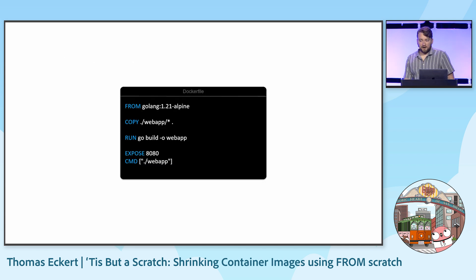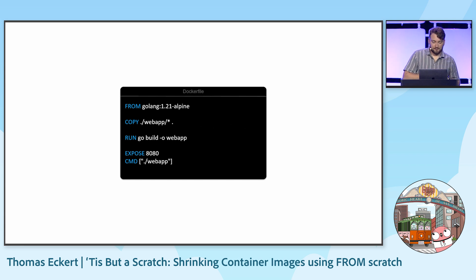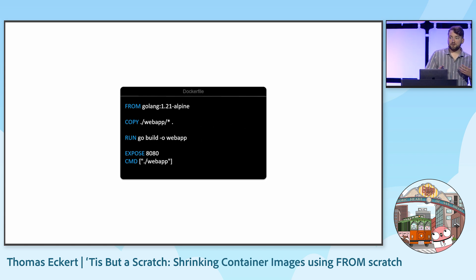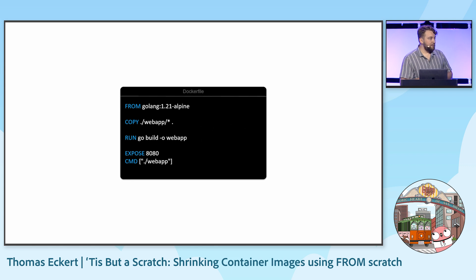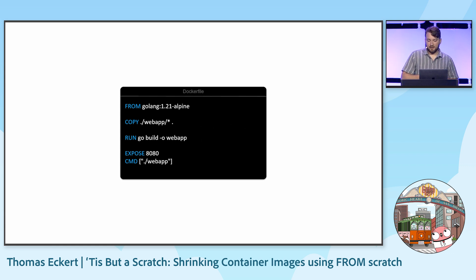Let's begin with a fairly normal-looking Dockerfile to ship a Go web application. I can count myself among the people who have written a Dockerfile like this. We begin with an Alpine Linux image that has Go 1.21 installed. Alpine is a distro of Linux that was designed to be lightweight. We copy the source code into the container, build the binary, configure the image to export on port 8080, and instruct the container to execute the web app binary when it runs.